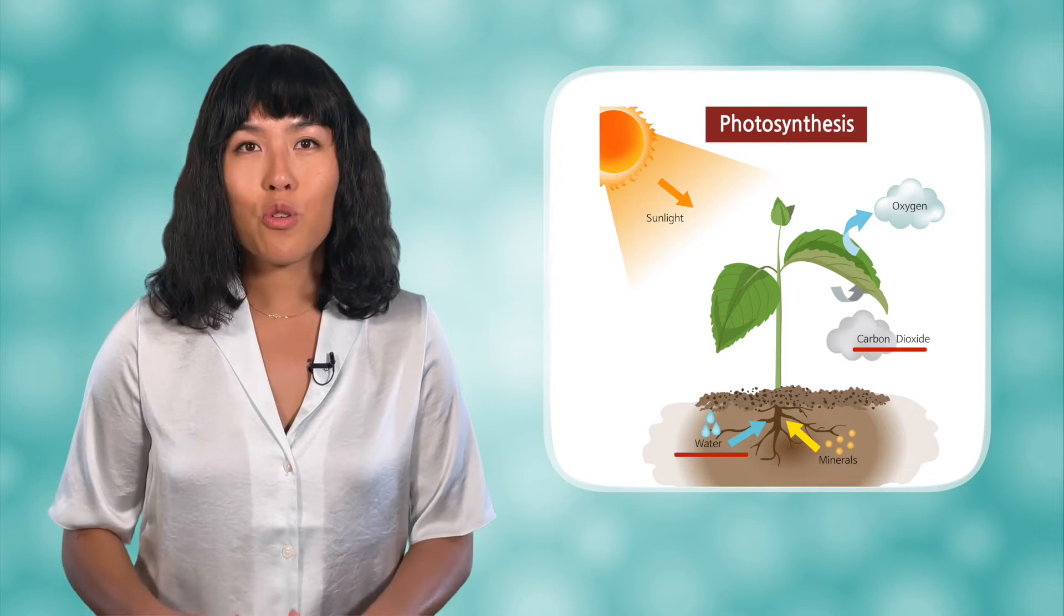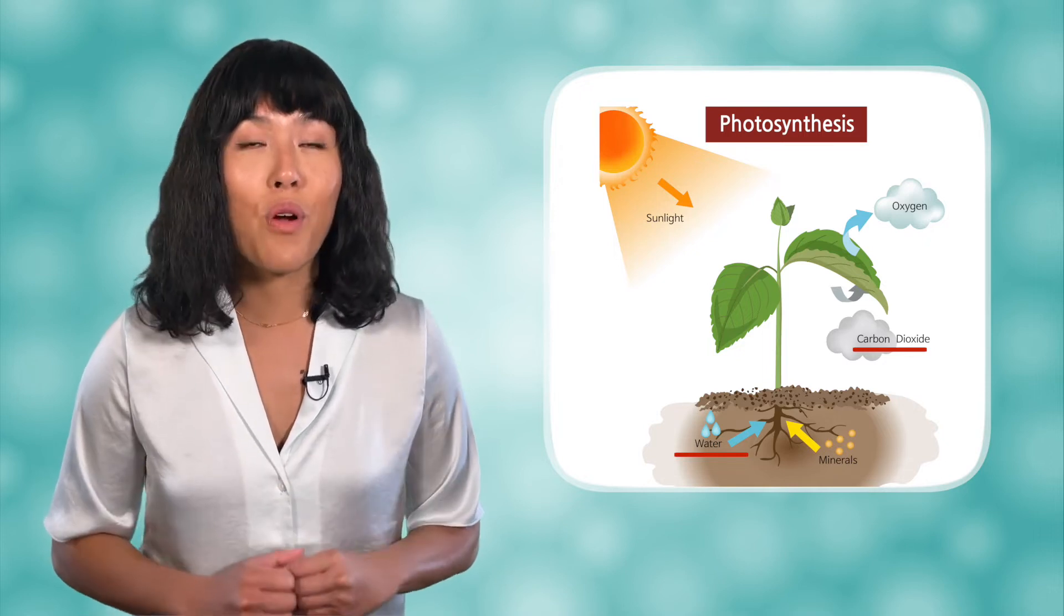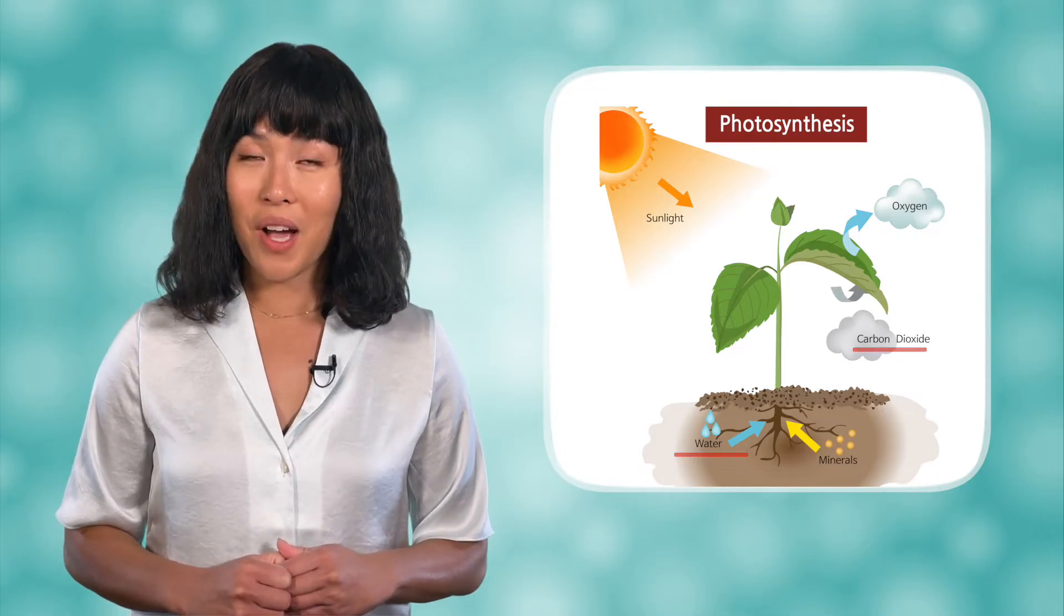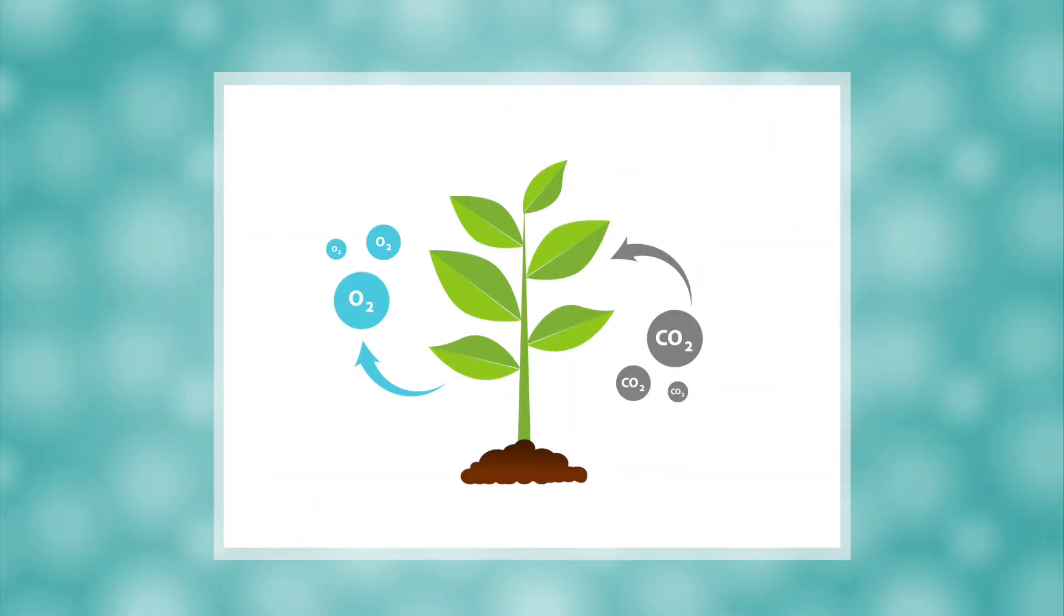The water has been transported up from the roots in the process we just saw. Where does the carbon dioxide come from? It comes from the air and enters through the leaves.